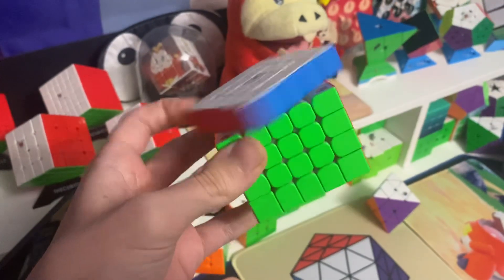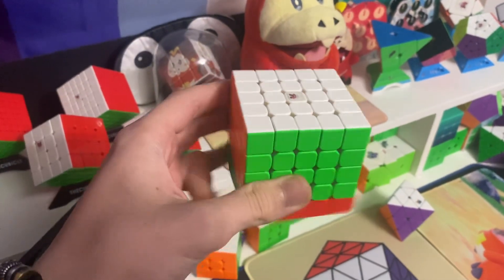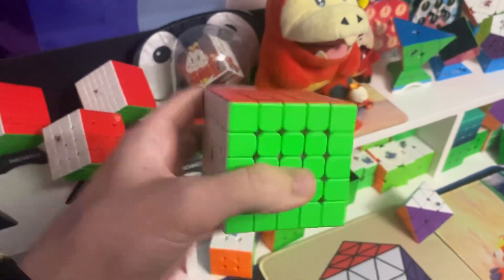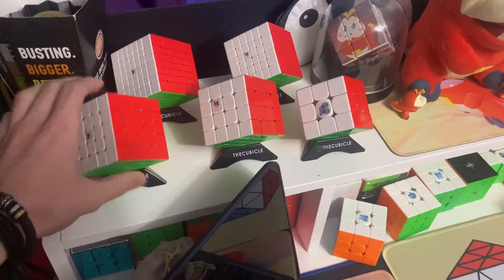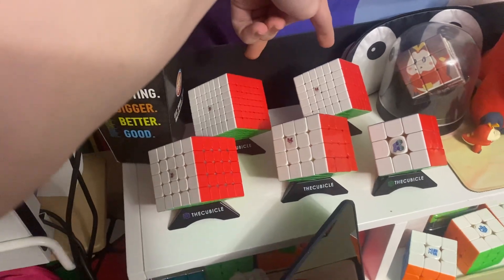For 5x5, I'll be using the GAN 5x5. I'm hoping to get a 108 average, maybe better, and another sub-1 single. Those are always nice to get. For 6x6 and 7x7, I main the Melon V2s, and I have no goal because my PRs are really good.